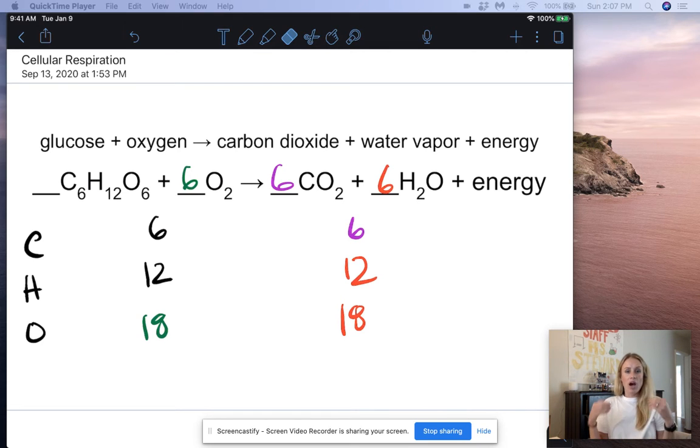Now, I want you to ask yourself, why is it that we have to balance these equations? Why do I have to have the same number of carbons on the reactant side and the product side? Why do I have to have the same number of hydrogens, the same number of oxygens, the same number of total atoms?